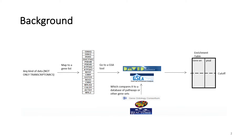Geneset analysis or GSA involves comparing a query geneset — a list or a rank of differentially expressed genes, for example — to a reference database using a particular statistical method, in order to interpret it as a rank of significant pathways, functionally related genesets, or ontology terms.